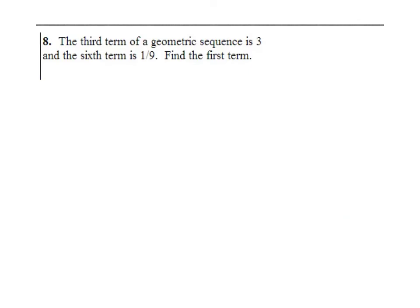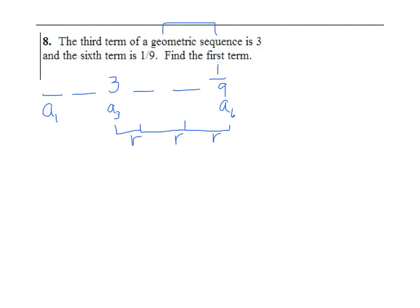Here's another type of problem: the third term of a geometric sequence is 3, and the sixth term is 1/9. Find the first term. Draw the situation: position 1, 2, 3 — a sub 3 equals 3; position 4, 5, 6 — a sub 6 equals 1/9. We need a sub 1. Each successive term is found by multiplying the previous term by r, so the key is to find r.